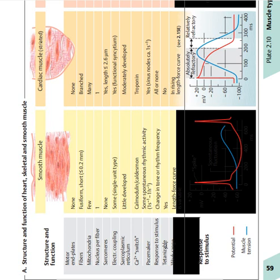In the action potential, we have the relative refractory period and the absolute refractory period. For cardiac muscle, the time of contraction of the muscle cell is approximately equal to the absolute refractory period. Since the contraction time is approximately equal to the absolute refractory period, it implies that the next action potential cannot cause another contraction within that time. This is why cardiac muscles are not tetanized.